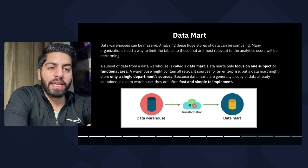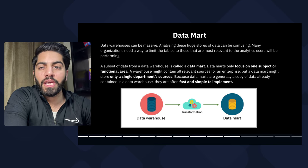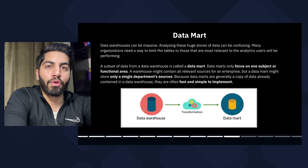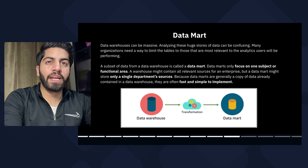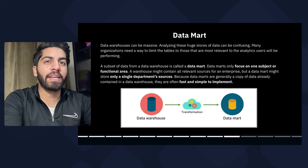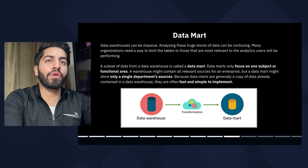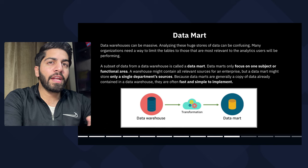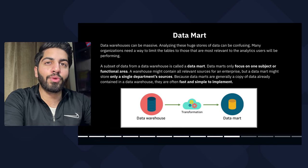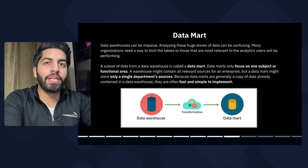Because a data warehouse can be massive, analyzing that huge amount of data can be very confusing. Many organizations need a way to limit the data presented to users according to their needs. For that, we have the data mart — a subset of data from a data warehouse. A data mart focuses only on one subject of data, whereas a data warehouse focuses on all subjects of the business. A data mart is created from a subset of data already stored in the data warehouse, making it very easy and fast to implement.